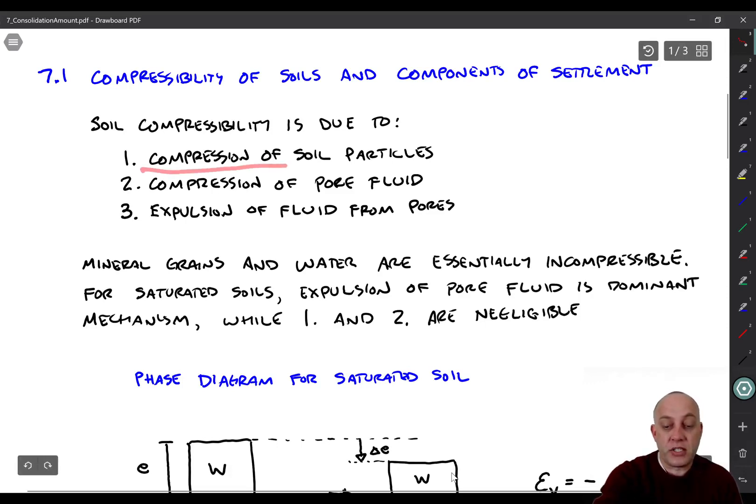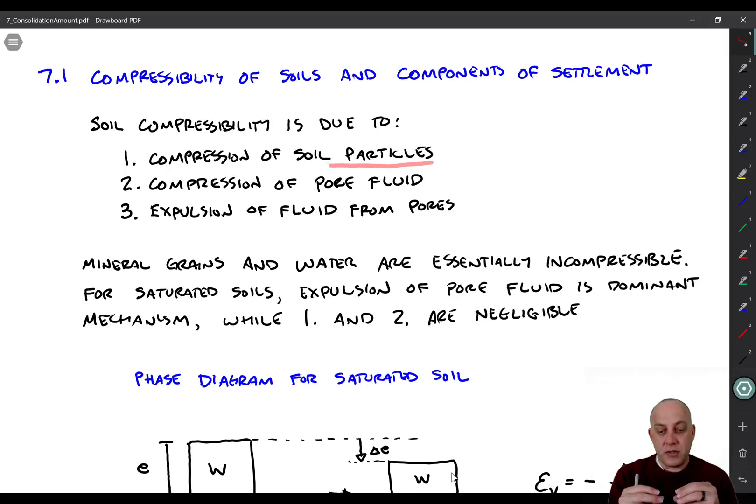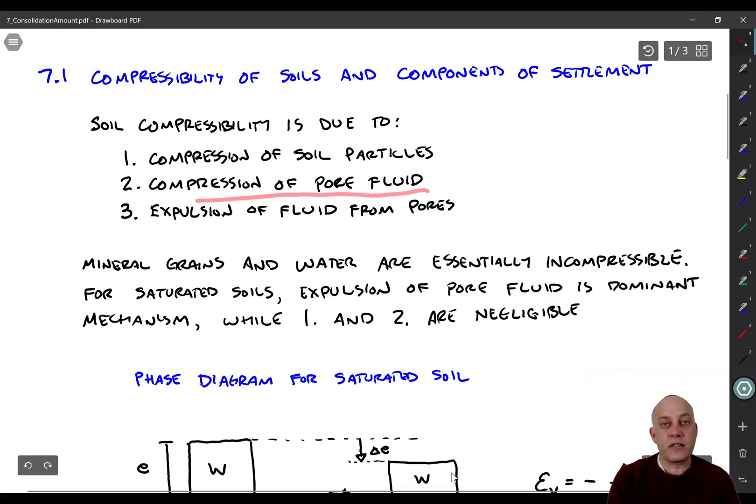So the first one is compression of the soil particles. And what I mean by that is if you take a little mineral grain and you have a material that that mineral grain is made of, let's say it's quartz, if you apply a pressure to that bulk material, it will undergo some volume change, right? Its bulk modulus is not infinite. It does have a finite bulk modulus that will cause it to have some compression if you apply pressure to it. Similar to the fluid, right? Pore fluid, water, let's say. Water does also have a finite bulk modulus, so when you load it, it will compress a little bit.